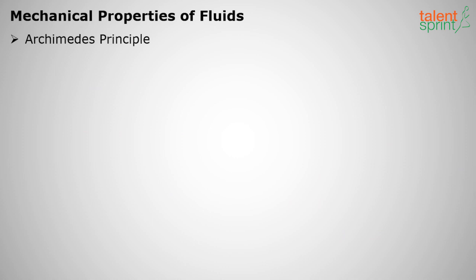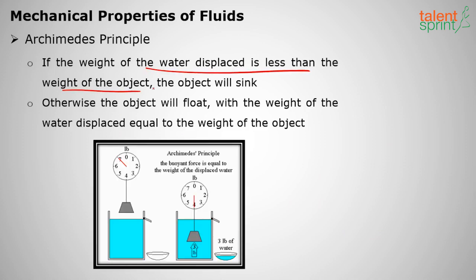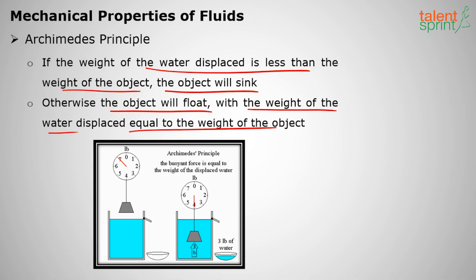Archimedes' principle: if the weight of the water displaced is less than the weight of the object, the object will sink; if the weight of the water displaced is equal to the weight of the object, it will float. For example, placing a 10 kg weight on water — if the water displaced weighs less than 10 kg, it sinks. This ties directly to density: higher density causes sinking, lower density causes floating.